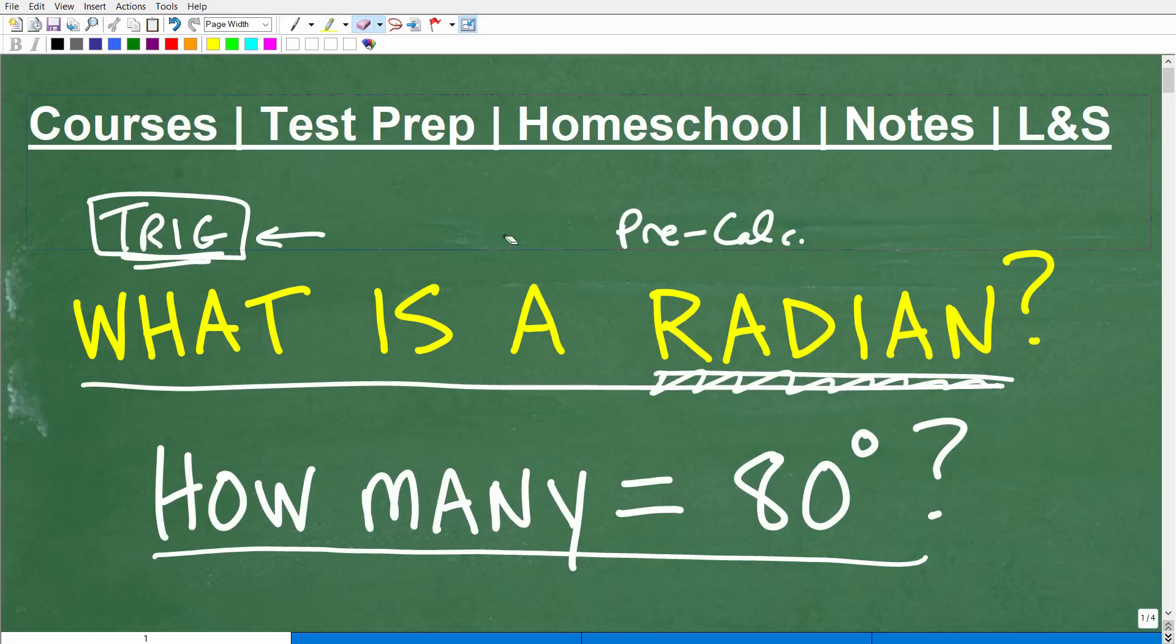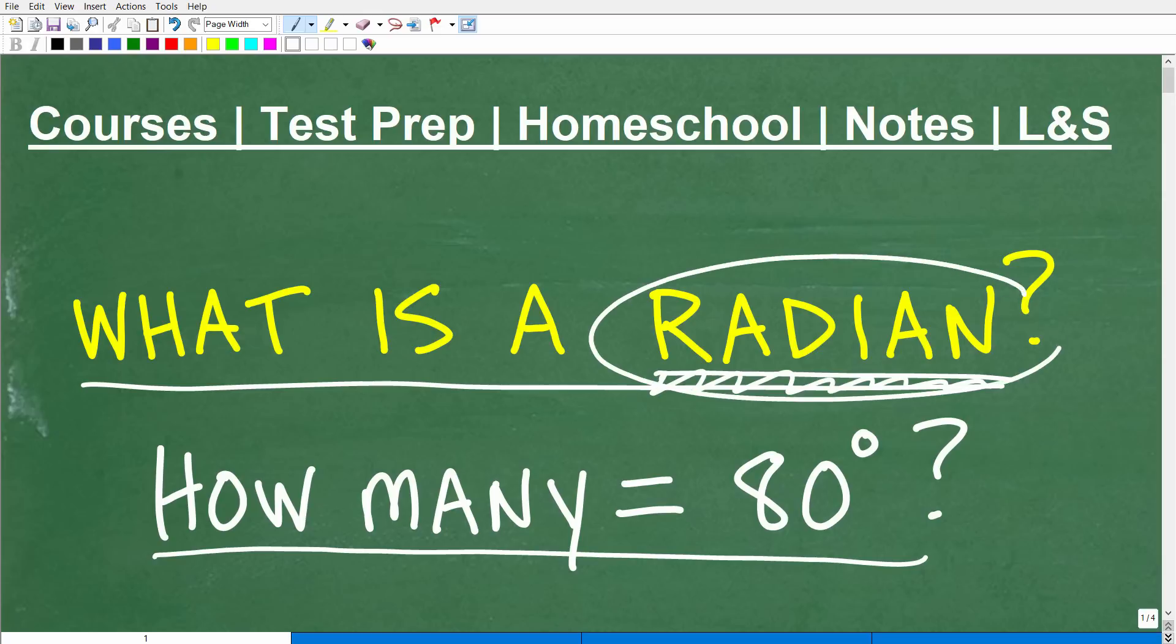If you have not taken pre-calculus, which means you probably haven't had trigonometry, which represents about a good third or half of a pre-calculus course, then you may not have seen this word radian. But don't feel like you have to be at this advanced level of math to understand this. This is not that difficult, but if you do have any intention of taking trigonometry, you're going to want to stick around. If you think you know the answer to this question, how many radians is 80 degrees, go ahead and put your answer into the comment section. I'm going to show you the answer here in just a minute or two.